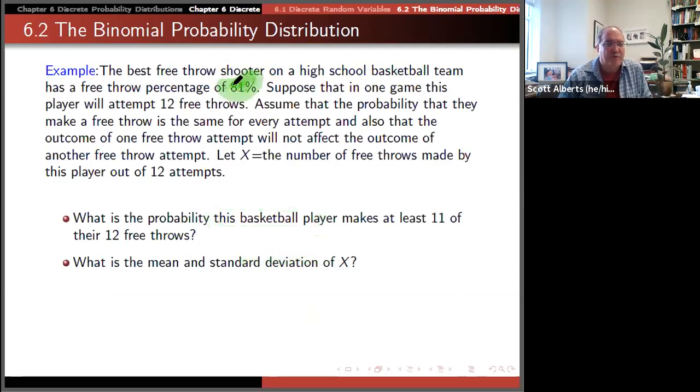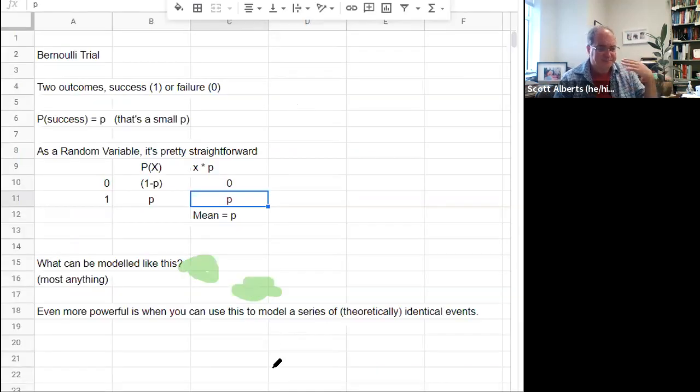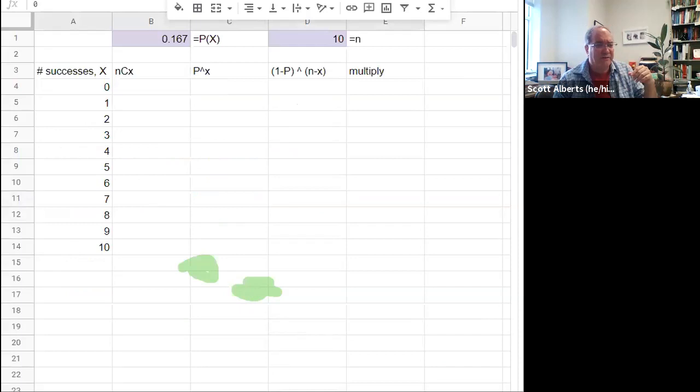So now we can look at this free throw example that we had before. The free throw shooter makes 81%. Now they're going to do 12 free throws, so we're not going to work it out, and we can carry out this mathematics. 12 choose 11 or 12 choose 12 is the combination number. That's a different notation she uses, but we could work that math out. Then take 0.81 to the first power times 0.19 to the 12 minus 11th power, and you get the answer. You can find the mean and standard deviation the same way. So the expected value would be 9.72 with a standard deviation of 1.39.